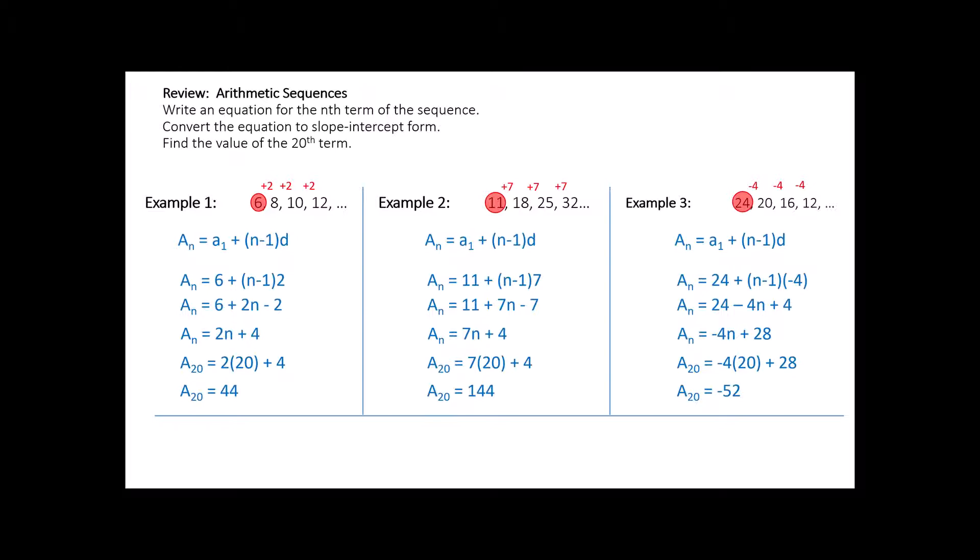Hopefully, that wasn't overly difficult for you. That is something we've talked about before. Arithmetic sequences are linear. That's why we're able to rearrange them into slope intercept form. Notice you have the constant rate of change of 2 here, and your zero term, if you were to go backwards, would have been a 4. They always have a starting point and a constant rate of change.